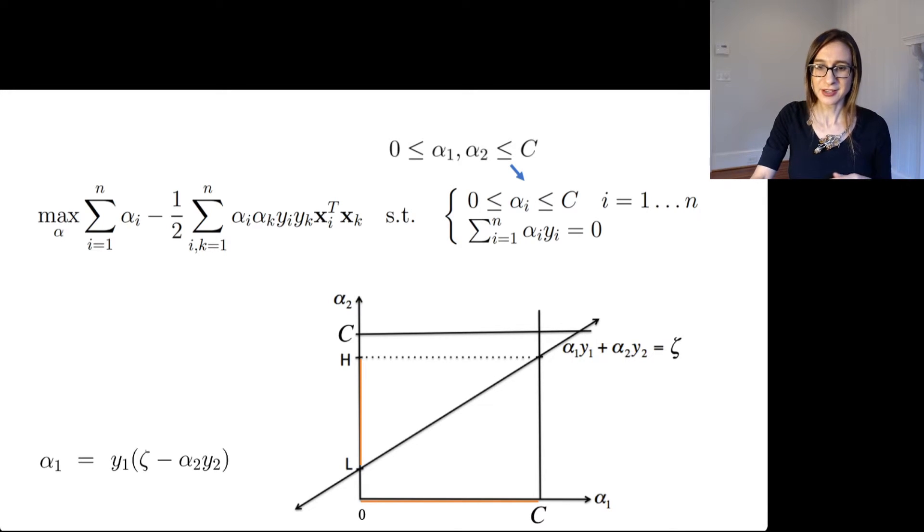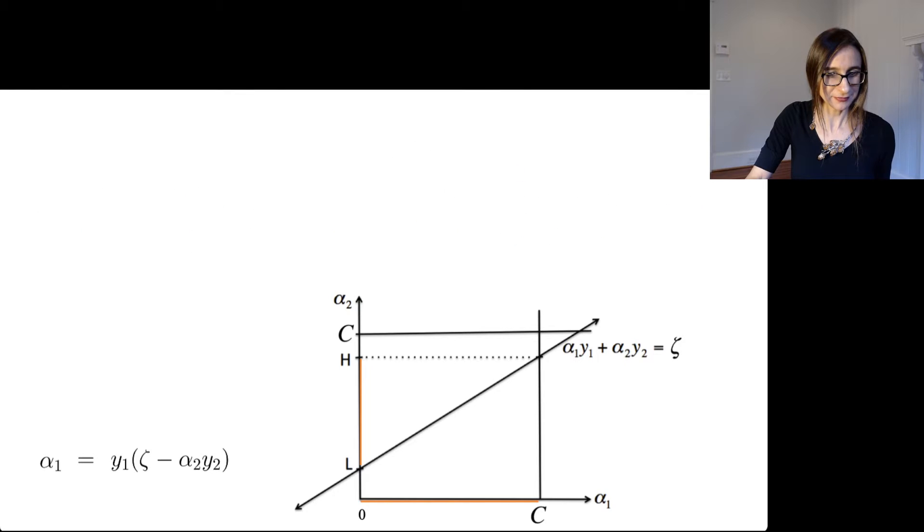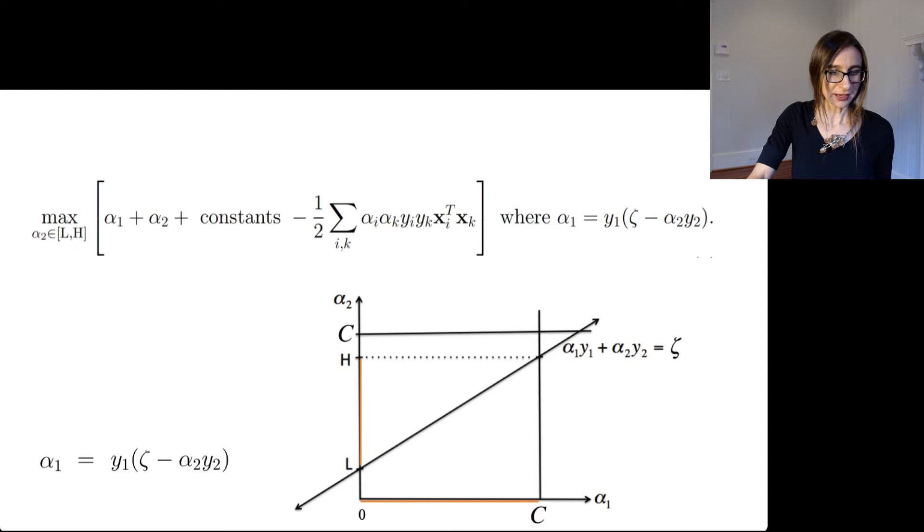Cool. And that's what I want. So what I want to do then is optimize alpha 2 within that range H to L, and then that will give me an alpha 1 value. And hopefully I can do this to optimize. I can pick my alpha 2 so that whatever alpha 1 value comes out, the two of them will help optimize my objective. So here we go. I want to maximize alpha 2 within that HL range so that when I set alpha 1 equal to that function of alpha 2, then I can maximize my whole objective.